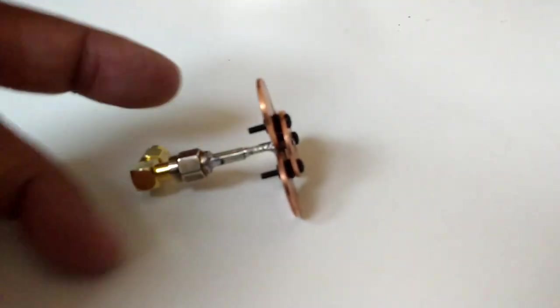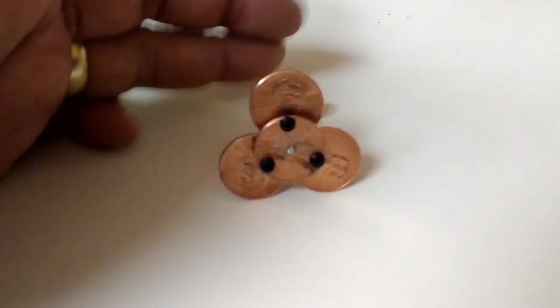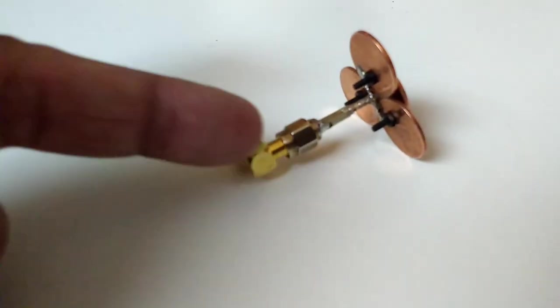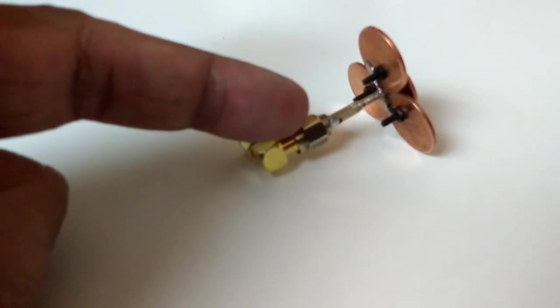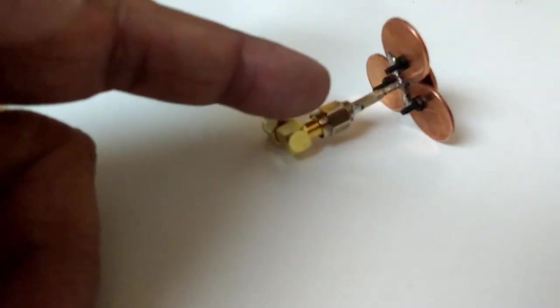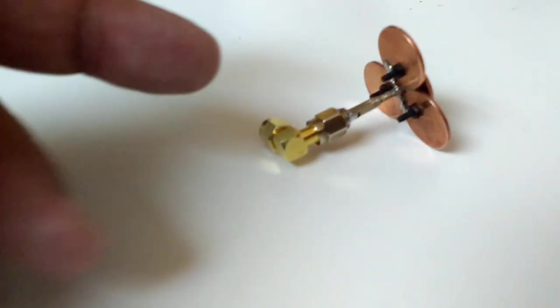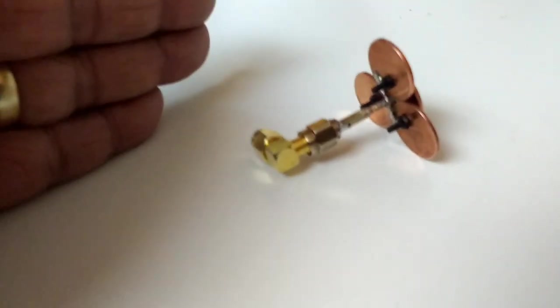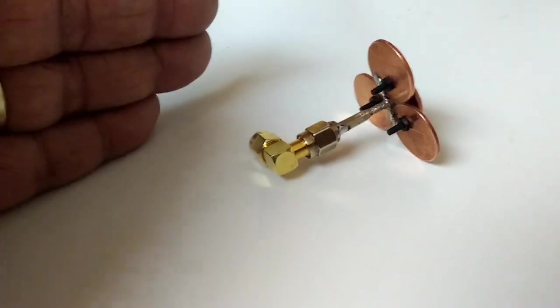You're going to need three o-rings, these are number four o-rings. And basically an SMA connector. Mine has a dual connector because I didn't have the one with the proper termination, so I ended up using this elbow here.